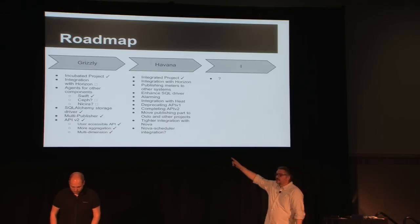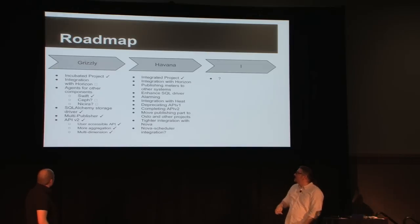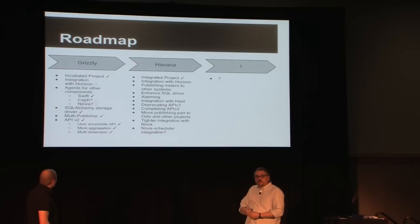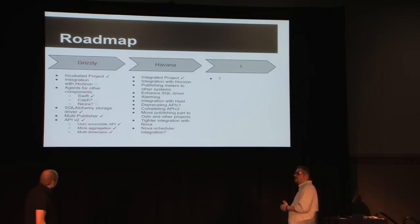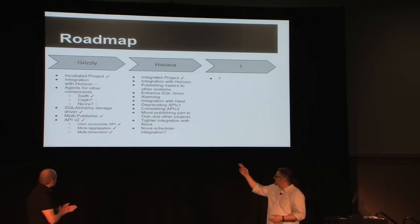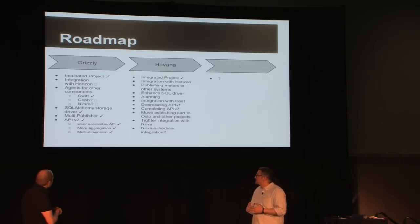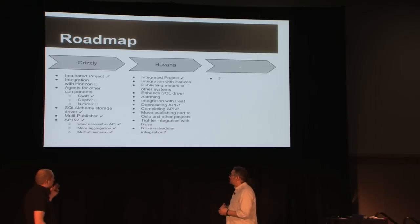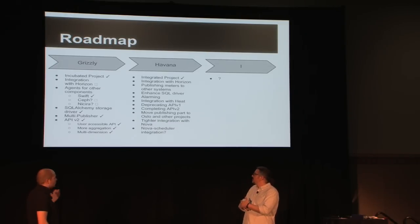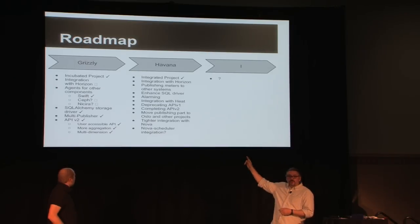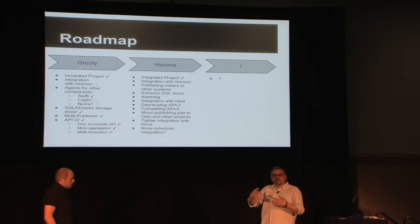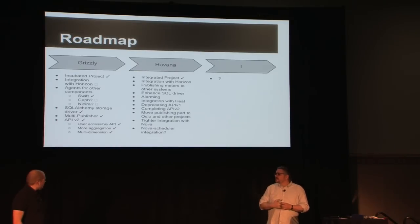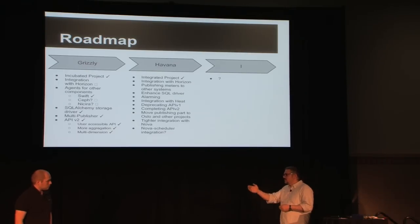Roadmap for Grizzly: everything with a check mark is done. As you can see, we did less than what we wanted but we did quite a bit. We became incubated and even graduated from incubation during that cycle. We implemented Swift, the SQLAlchemy storage driver, and even HBase which was not planned when we started the cycle. The user-accessible API is quite nice if you want a plug-in in Horizon to display user information. Multi-dimension filtering is also a great contribution from Angus at Red Hat.